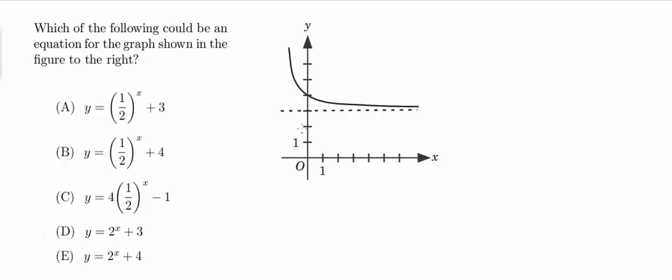here at y equals 3. So what that tells me is that I can already eliminate choice B, choice C, and choice E. Because this has a horizontal asymptote of 4, this has one of negative 1, and this one also has an asymptote of 4.